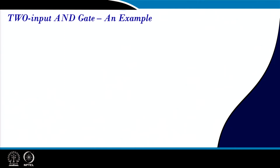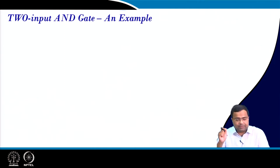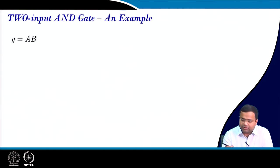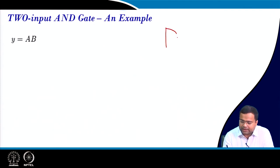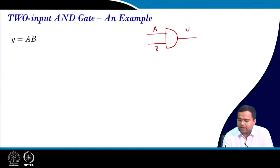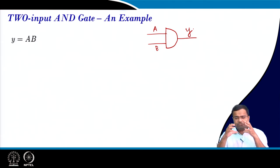First we want to take an example of an AND gate. The AND gate we are considering here is a two-input AND gate, where A and B are the two inputs and Y is the output. We want to implement this gate.